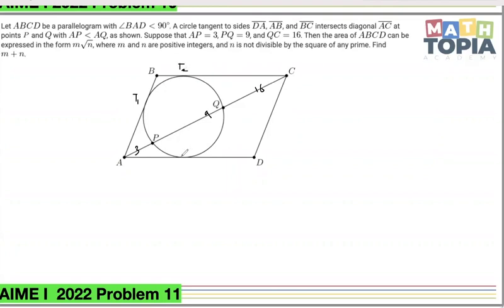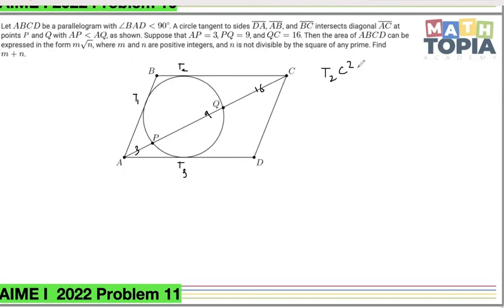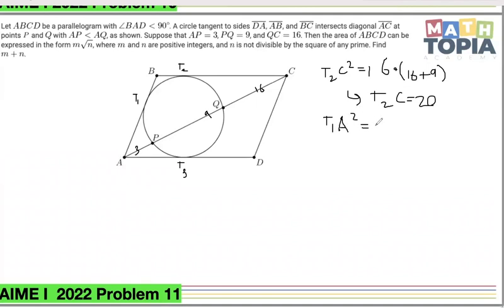I'll call the three tangency points T1, T2, T3. Immediately, the setup of a circle with a line and tangents says to use Power of a Point. Using it on T2, C, Q, and P: T2C² = 16 × (16 + 9) = 16 × 25 = 400, so T2C = 20. Using points A, T1, P, and Q: T1A² = 3 × (3 + 9) = 3 × 12 = 36, so T1A = 6.